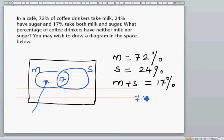72 take away 17, so this is 55%. So 55 plus 17 is 72. There are 55% who take only milk.